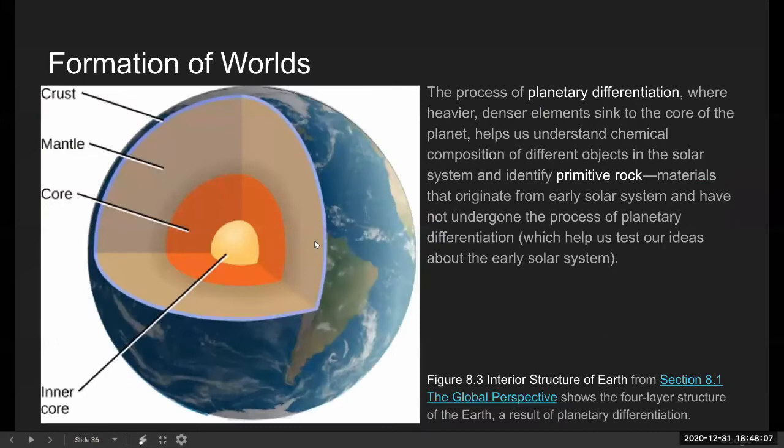And this is an illustration of planetary differentiation, which you will again see in future submodules. I think it's easiest to see directly in the terrestrial planets, like Earth here. Earth is the terrestrial planet that we know the most about.